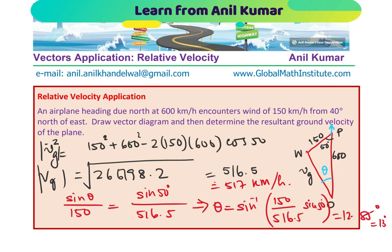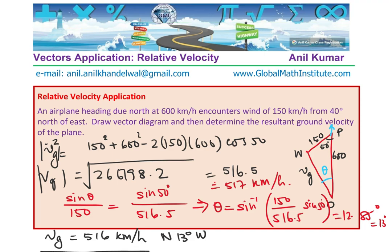I am rounding this velocity to 517 kilometers per hour. So, we can write down our answer in this particular case and that is that ground velocity, the resultant ground velocity is equal to 516 kilometers per hour and the direction being, as you can see, from north 13 degrees west. That is how we can actually solve this type of equation. I hope the concept is clear to you.